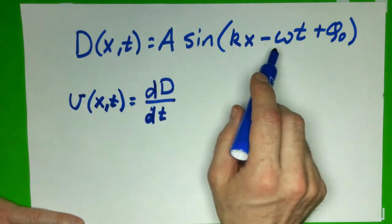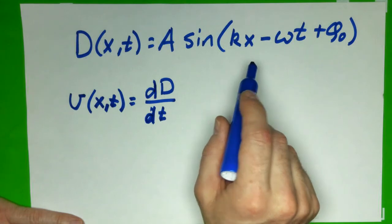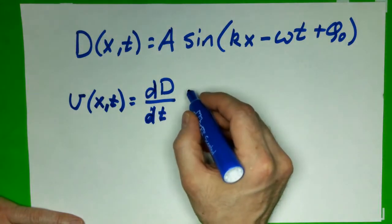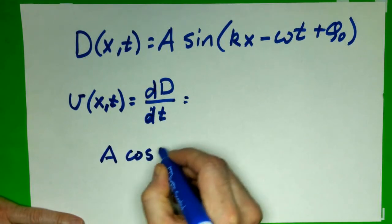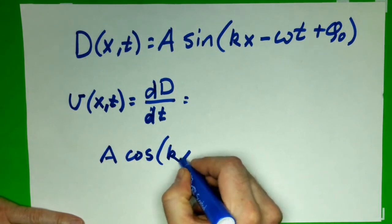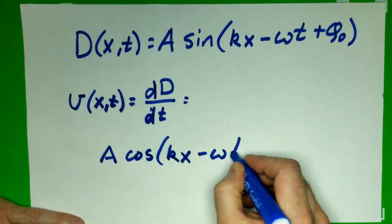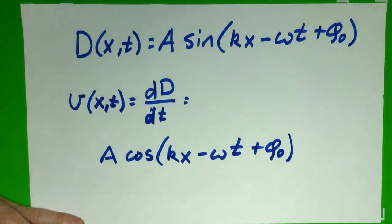We have a sine of y, and the derivative of sine is cosine. So we're going to get, I'll bring it down here, a cosine of everything in that argument, our y, which in this case is kx minus ωt plus φ₀. Okay, so that's our first step.